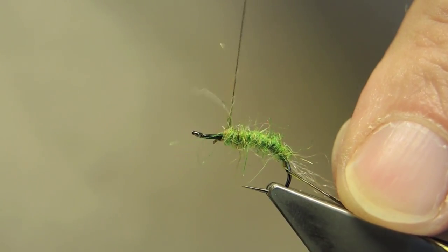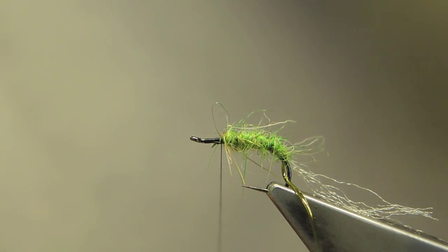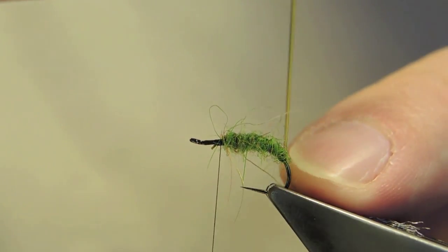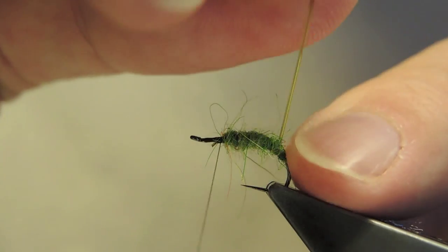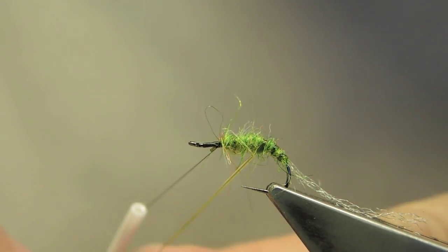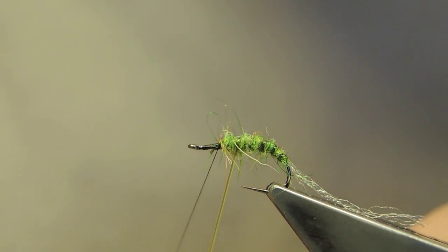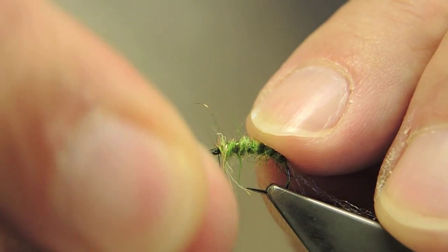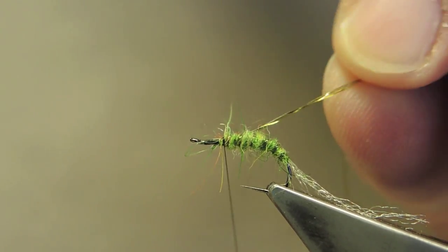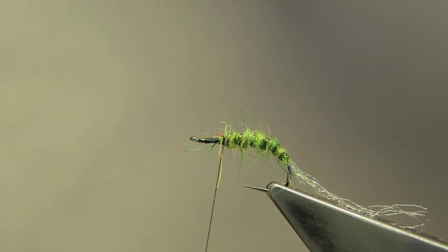Until about a quarter behind the eye. The D-rib is then wrapped in open spiral under some tension to give a segmented effect, and tied down. The excess is trimmed.